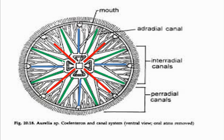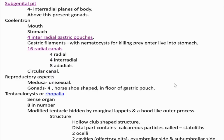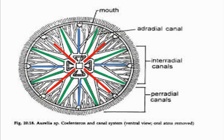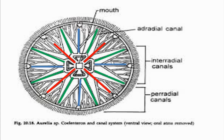The radial canals open to the circular canal. Regarding reproduction: the medusa is unisexual and gonochoric, meaning males and females are separate individuals. Four horseshoe-shaped gonads are present, each located in a gastric pouch, as we have already seen.